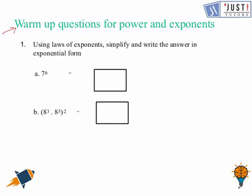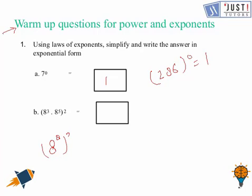Here are the warm-up questions for you to try. You can pause the video. In question number one, you need to use some important laws of exponents to simplify the given equation. If it is seven raised to the power zero, the answer is one, as any number raised to the power zero is one. Even if it is 286 raised to the power zero, the value is one. In the next part, the base is the same, so we add the powers, giving us eight to the power two, which we can write as eight over sixteen.